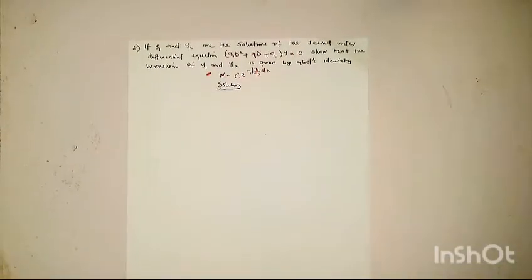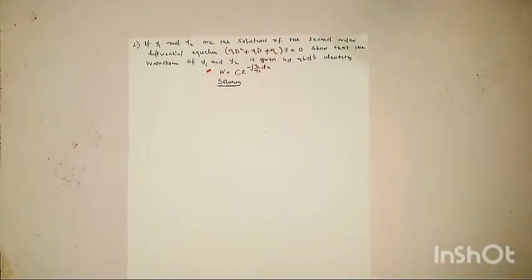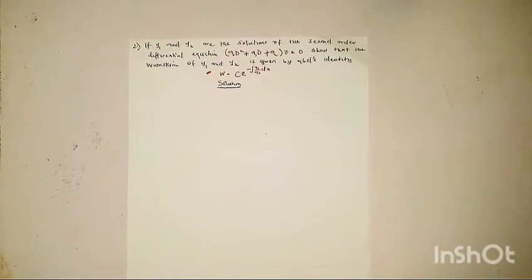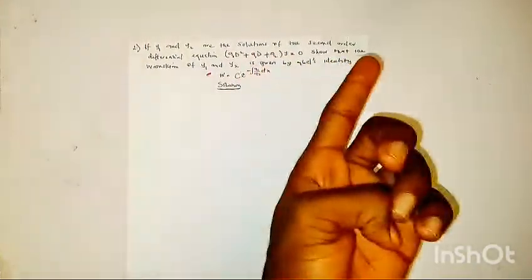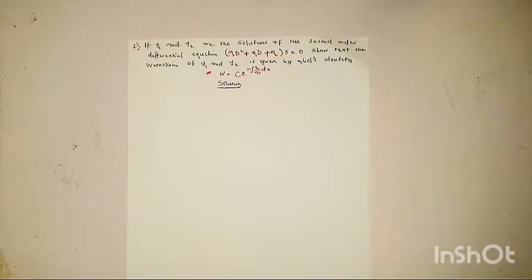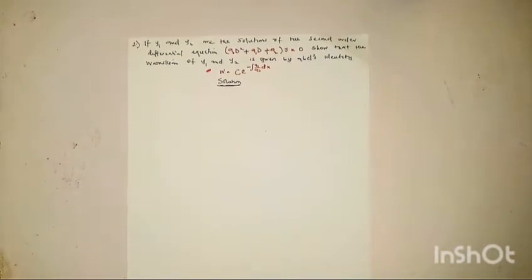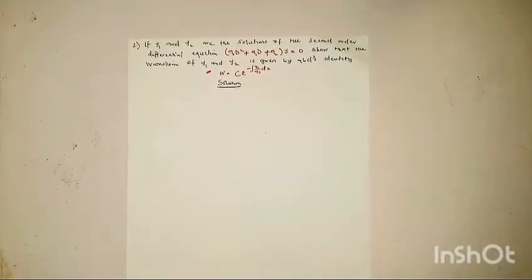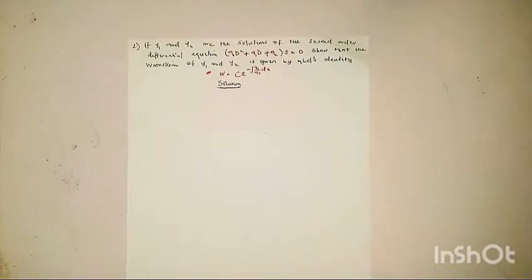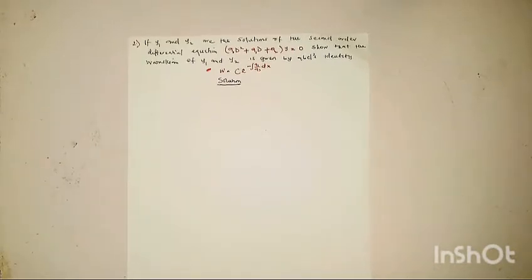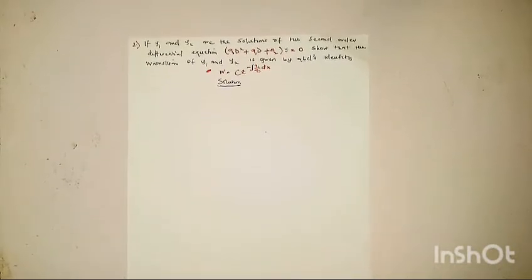Here we are on my second question. The second question given says y1 and y2 are solutions of the second order differential equation. This is a general form of the second order differential equation, and we are to show that the Wronskian of y1 and y2 is given by Abel's identity, which is a constant times the exponential of the coefficient a1 divided by the leading coefficient a0, integrated with respect to x.